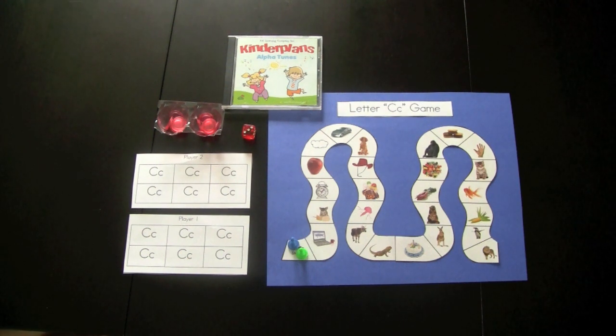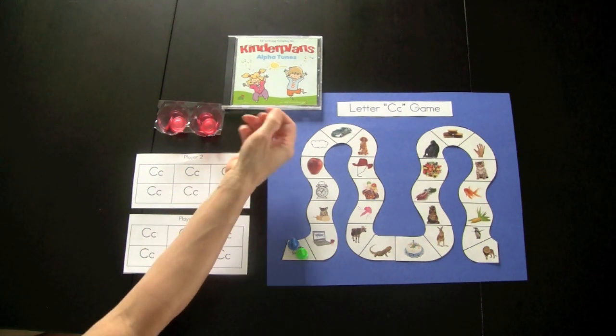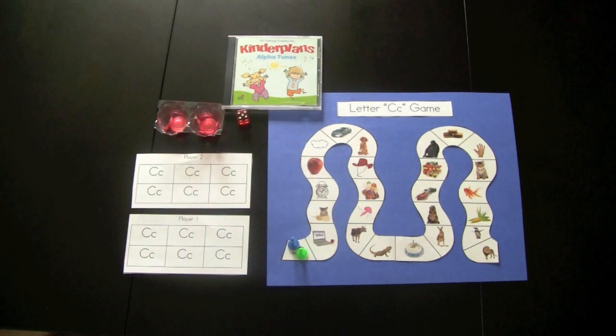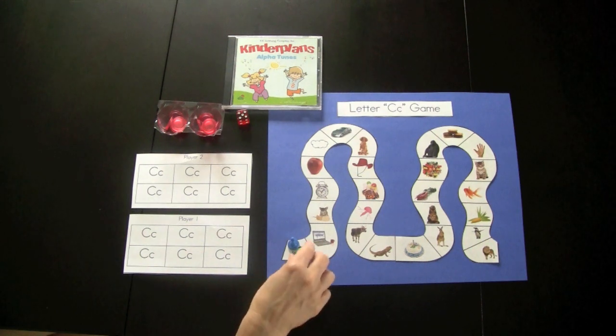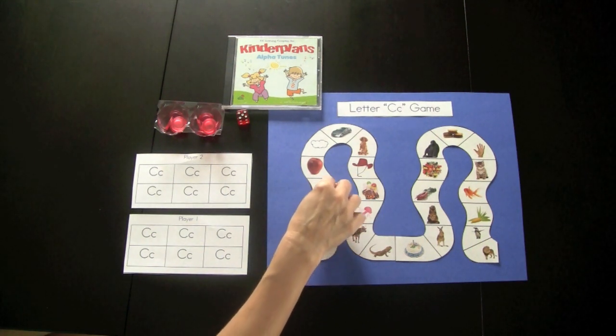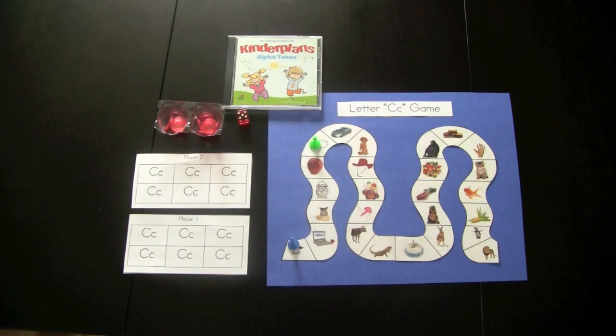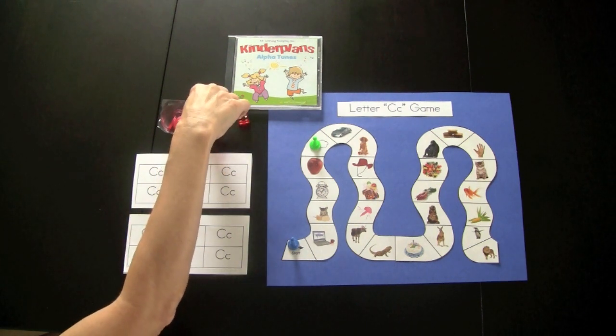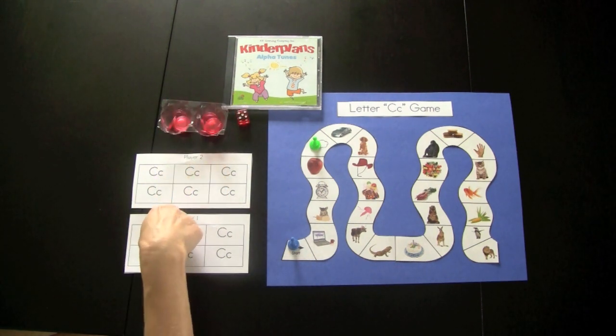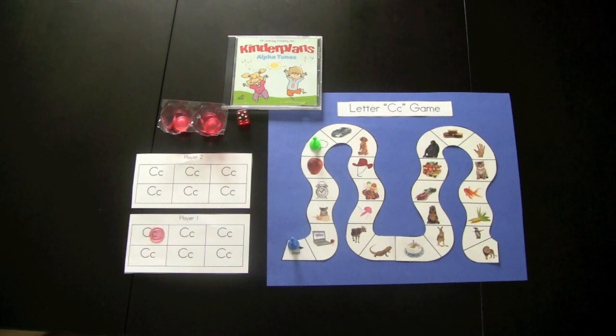Now I'm going to demonstrate how to play the game. Player one shakes the die. They have shaken number five so they would move their game player five spaces. One, two, three, four, five. They have landed on a cloud and that begins with the letter C sound. So they would put a bingo chip on their letter game board. The first person to have their game board completed would be the winner.